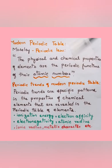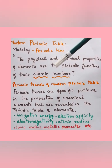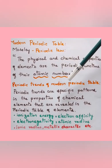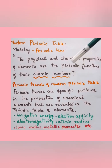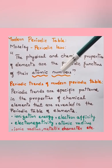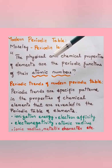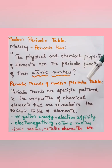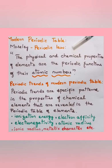Even though Mendeleev's arrangement was similar to the one we use today, Moseley was the one who put the table in its present form. He showed that atomic number plays a major role, not atomic weight. According to the Modern Periodic Law, the physical and chemical properties of elements are periodic functions of their atomic numbers. When elements are arranged in increasing order of atomic number, similar elements repeat after regular intervals, leading to the long form of the periodic table.